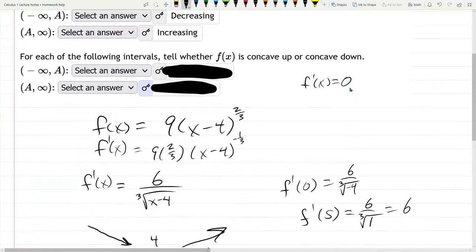Alright. We're almost there. We just have to deal with concavity. Now, concavity, you need the second derivative. The second derivative is positive, you're concave up, negative concave down.